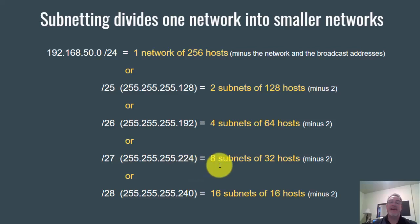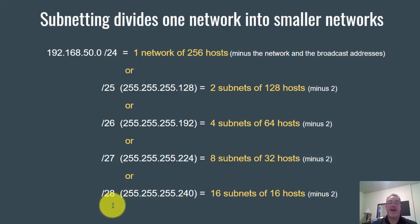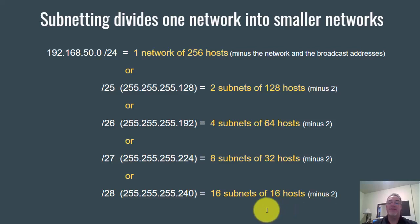Or you could take this one network and turn it into eight subnets of 32 hosts each — 256 divided by 8 is 32. To do that, you change the subnet mask to /27. For 16 subnets of 16 hosts each, change to /28. You could also do /29 for 32 subnets of 8 hosts, or /30 for 64 subnets of 4 hosts. We typically don't go lower than /30, because minus the network and broadcast addresses, you only have two usable addresses — which is usually the minimum needed.